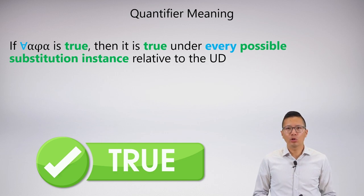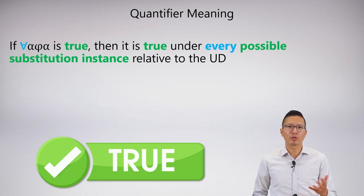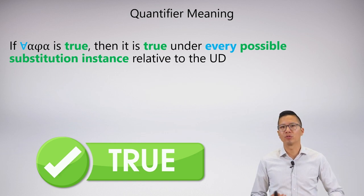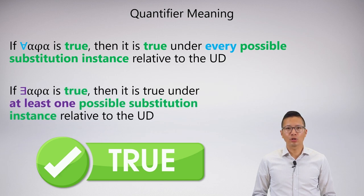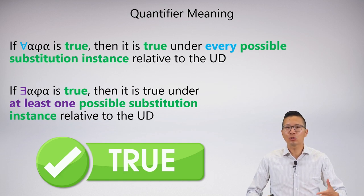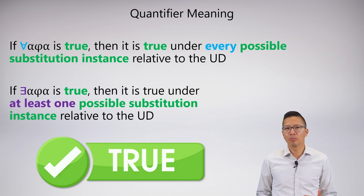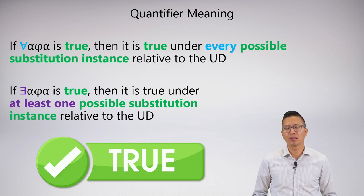We can now get at quantifier meaning using the idea of a substitution instance. For the universal: if a universal statement is true, then it is true under every possible substitution instance relative to the universe of discourse — and for us that means everything. For the existential: an existential statement is true means it is true under at least one possible substitution instance relative to the universe of discourse. So the universal holds under every substitution instance, and the existential holds under at least one — maybe more, maybe all — but at least one substitution will make the statement true.